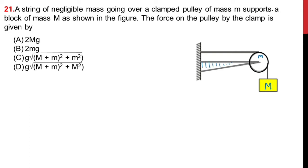This is the clamp given. How much force is applied by this clamp on the pulley we have to calculate. The force acting on this block of mass m is vertically downward — that is mg, the weight of the block. So there will be a tension acting on the string upward. The same way, there is tension acting in this direction, and also in this direction, tension will be acting.